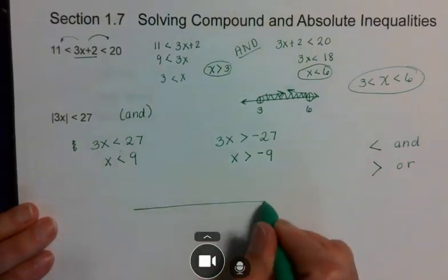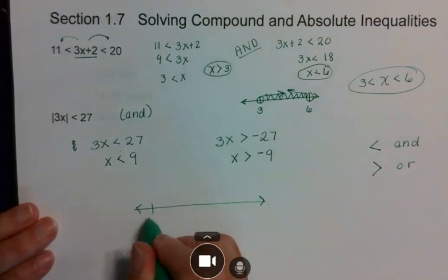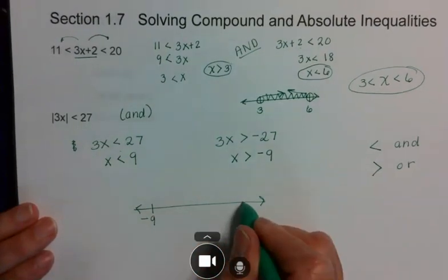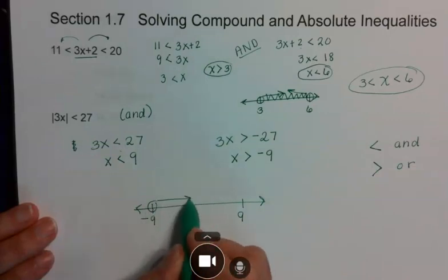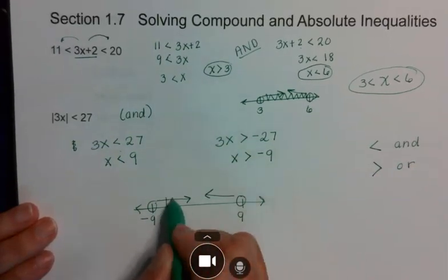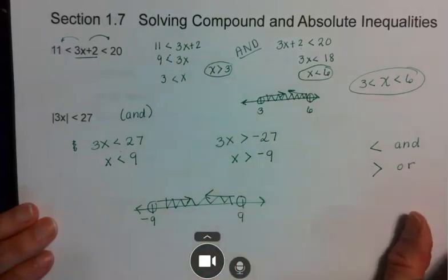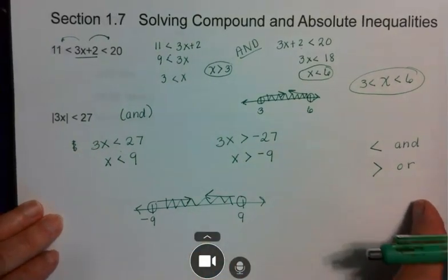I'm looking for the area that those two have in common. So I have a negative 9, I have a positive 9. This one goes in that direction, this one goes in this direction. So I'm talking about all the space that's within it.